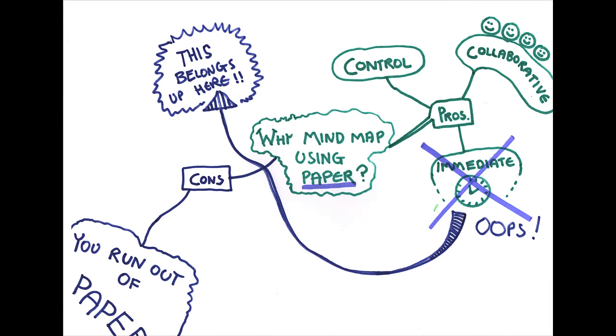Also, you might have started doing a mind map and then halfway through realised that one of the branches is in totally the wrong place. Now, this can be really frustrating because it means you have to scrub that out, or it means that you might even have to start doing your map again from the beginning.